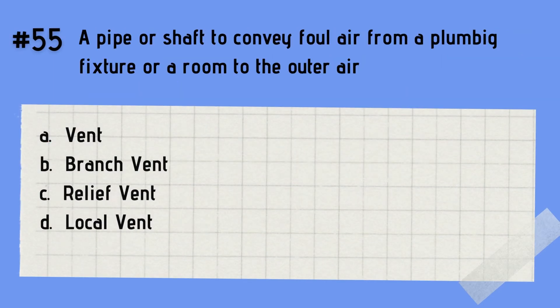Question 55: It is a pipe or shaft used to convey foul air from a plumbing fixture or a room to the outer air. A. Vent. B. Branch vent. C. Relief vent. D. Local vent. The answer is D — local vent. A local vent is a pipe or shaft used to convey foul air from a plumbing fixture or a room to the outer air.